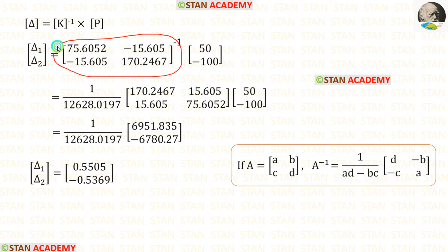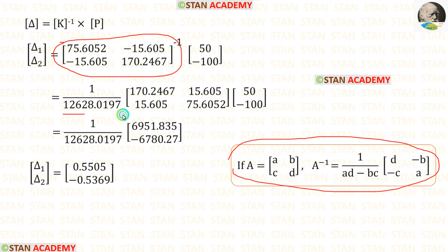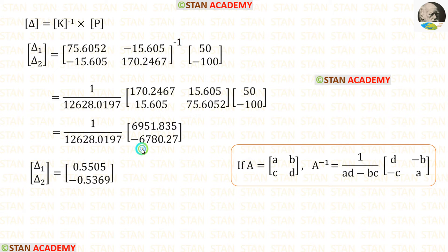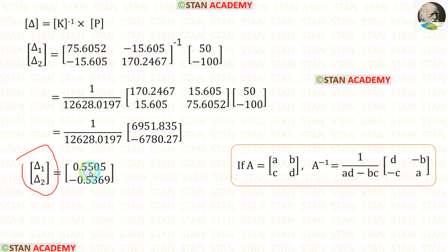We have calculated the K matrix and P matrix. For the K matrix we need to find its inverse — we can use a calculator or apply the inverse formula. Then we multiply the inverse K matrix by the P matrix. After multiplying and dividing by the appropriate values, we finally obtain delta 1 and delta 2.